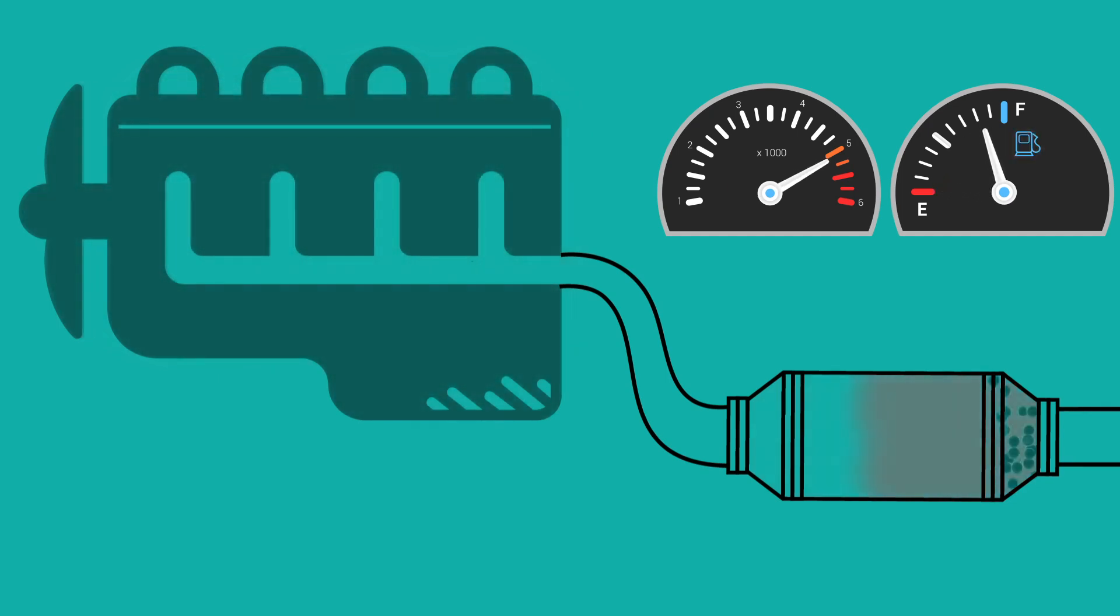The first sign of a blocked DPF is often a warning light on the dashboard of the vehicle, together with a noticeable reduction in engine performance.